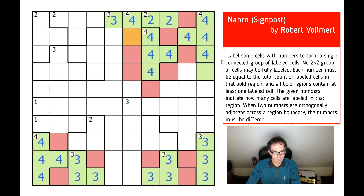This square is in a three-region, so it can't be a three either, because that would break the condition about having threes across a boundary - so that square is red. Now this green area is isolated unless this cell is green.